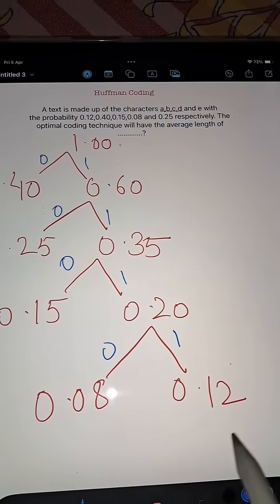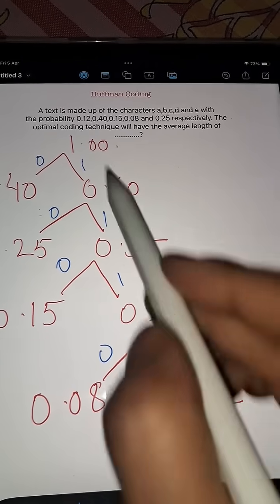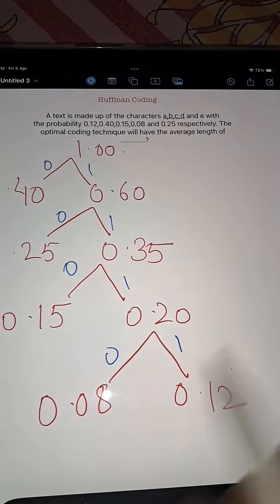So if I say what is the frequency of this? How many bits are required for 0.12? So it is 1, 2, 3, 4. 4 bits are required for it. Now the next one is counting along the tree paths.